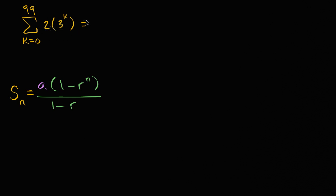This is going to be equal to two times three to the zero, which is just two, plus two times three to the first power, plus two times three to the second power, plus two times three to the third power, and we're gonna go all the way to two times three to the ninety-ninth power.